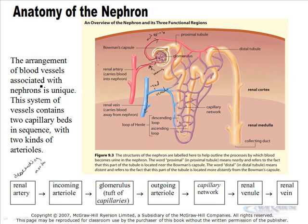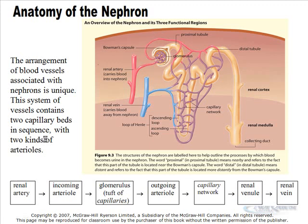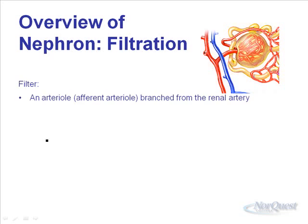The arrangement of blood vessels associated with the nephron is unique — there are actually two capillary beds in sequence. The first capillary bed has nothing to do with deoxygenation, so the question is: what is it there for? The second capillary bed involves deoxygenation — that's more normal. But why is it wrapping around all those tubes? Here's what's happening: this is where blood gets cleaned. The first thing that happens is filtration — everything gets filtered out of the blood.